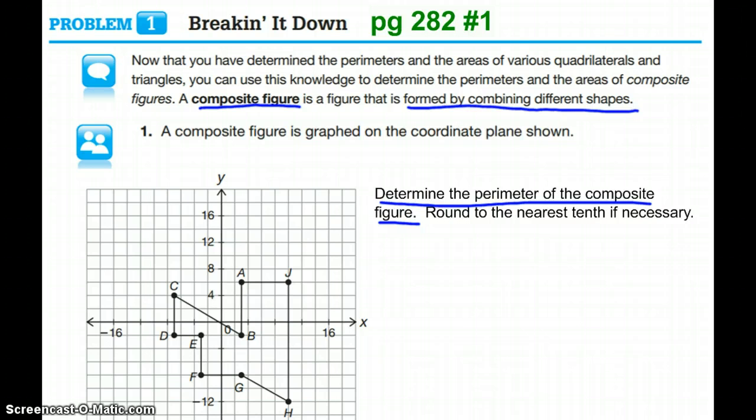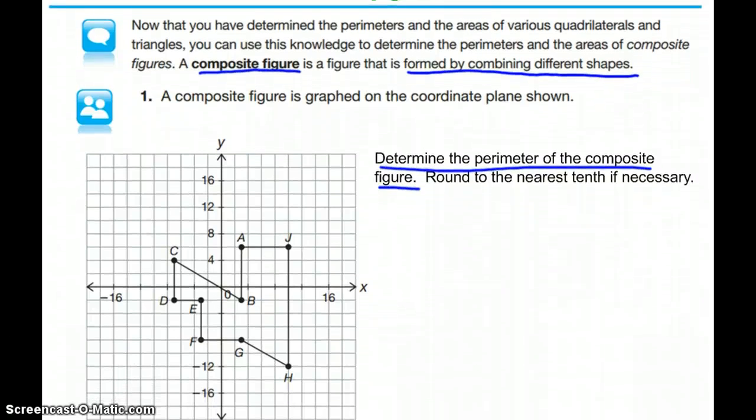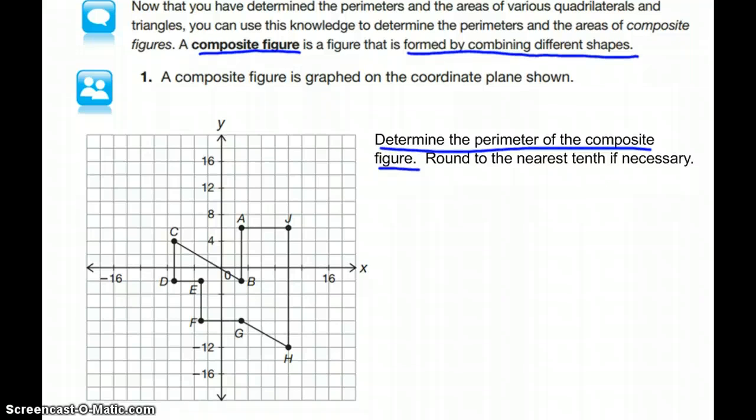As we take a look at the diagram, we have a figure in the coordinate plane made up of multiple shapes. You could see triangles, rectangles, squares, trapezoids—it's made up of multiple different shapes.